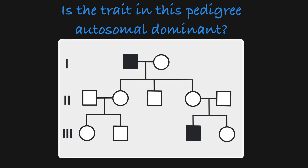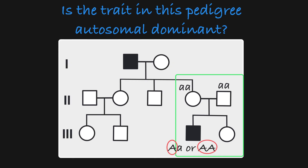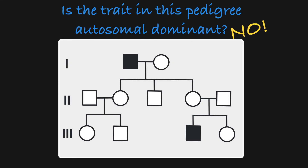Now let's take a look at this pedigree. Could the trait in this pedigree be inherited in an autosomal dominant manner? I look at this subfamily, in which I see two unaffected parents having an affected son. If the trait were inherited in an autosomal dominant manner, these two parents would have to be homozygous recessive, and they could not have a child that is affected. With autosomal dominant inheritance, this affected child would have to have at least one dominant allele, which these two unaffected parents cannot provide. So this pedigree is not following the rules of autosomal dominant inheritance — it must be tracing a trait with some other mode of inheritance.